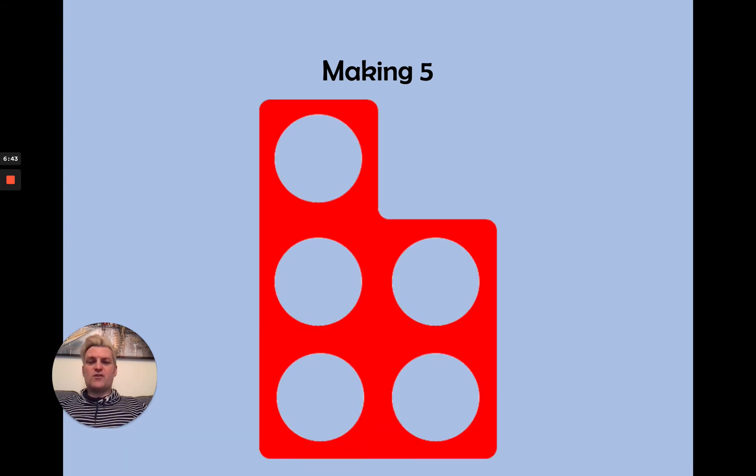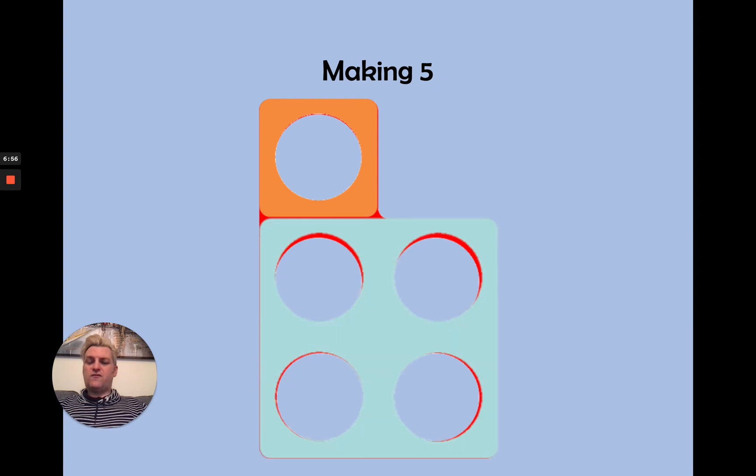Let's try it with another one, shall we? Here's the five. Let's start with the one. And what else do we need now to make five? We need one and four. There's the four. So we've got one and four. That makes five.